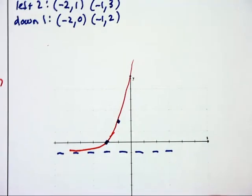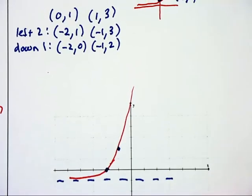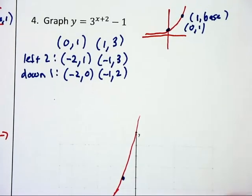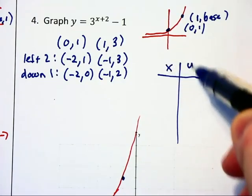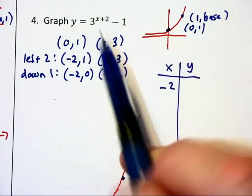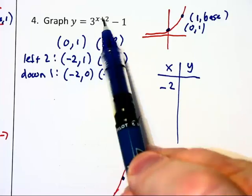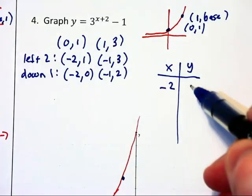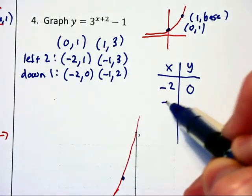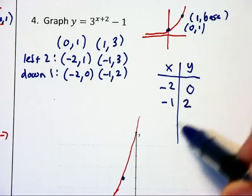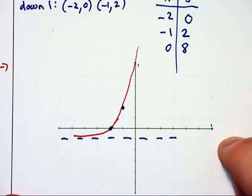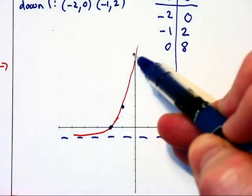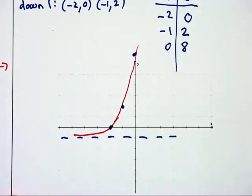Now if you don't like that transformational approach, you can basically take an xy chart to this problem but have to do the transformations. If you substitute in negative 2, you'll have 0 for an exponent. Anything to the 0 is 1, minus 1 is 0. Similarly, negative 1 will give you an output of 2, and 0 will give you an output of 8. You'll notice these points, other than (0,8), are the ones I've plotted on this graph.